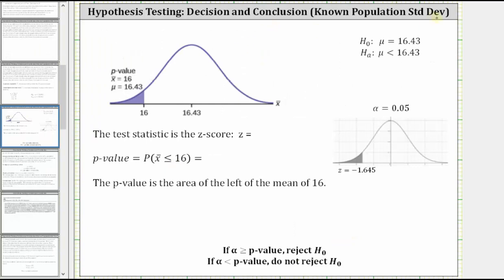Because we know the standard deviation, the test statistic is a z-score. Looking at the graph, the population mean is 16.43 and the sample mean is 16. The area to the left of 16 under the curve represents the p-value. The p-value equals the probability that x-bar, the sample mean, is less than or equal to 16. Now we need to go to the TI-84 and determine the z-score and the p-value.